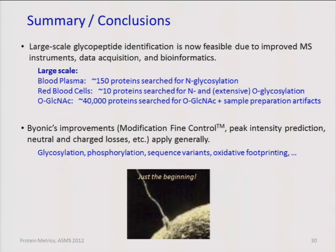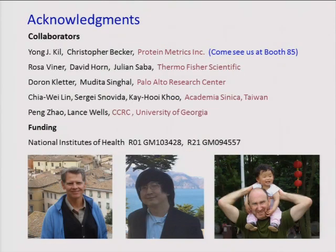I want to leave you with two things. Large-scale glycopeptide identification is feasible — I showed three big searches for the three types of glycosylation. The other thing is we didn't tweak or train Byonic specially for glycopeptides; Thermo just gave us the data and asked if we could do it, and it turned out we could. All the improvements in Byonic apply to other difficult types of searches.